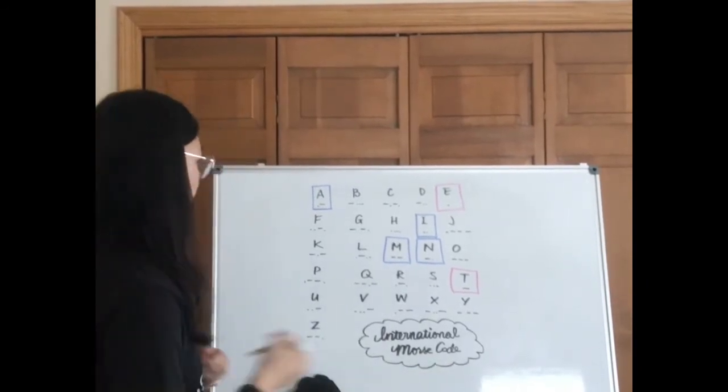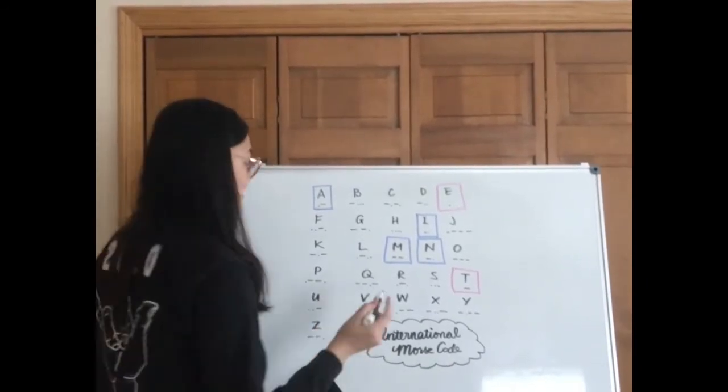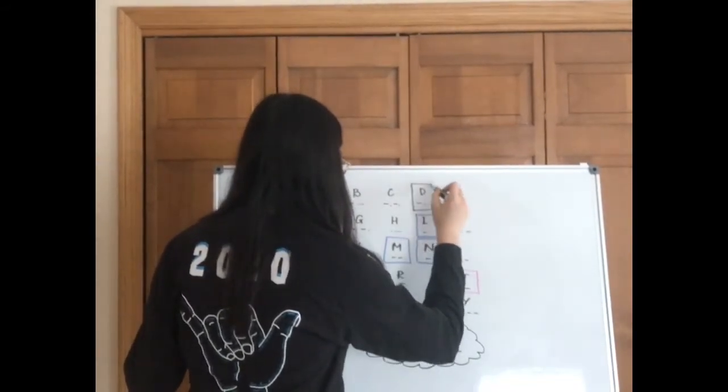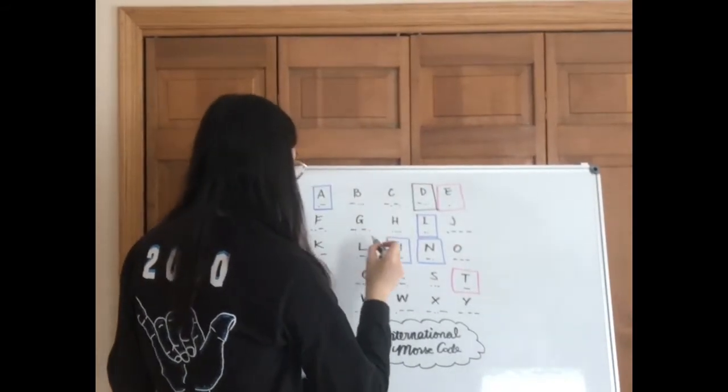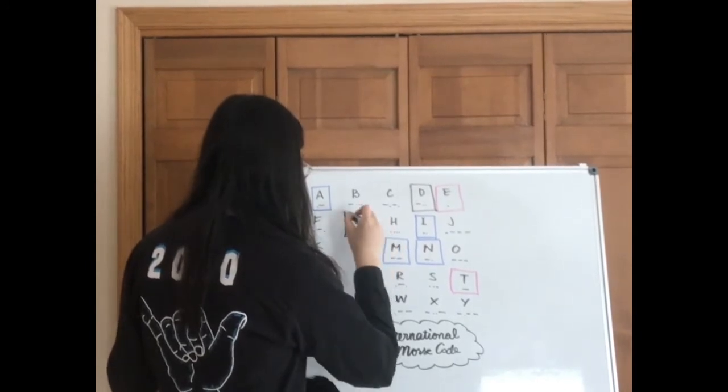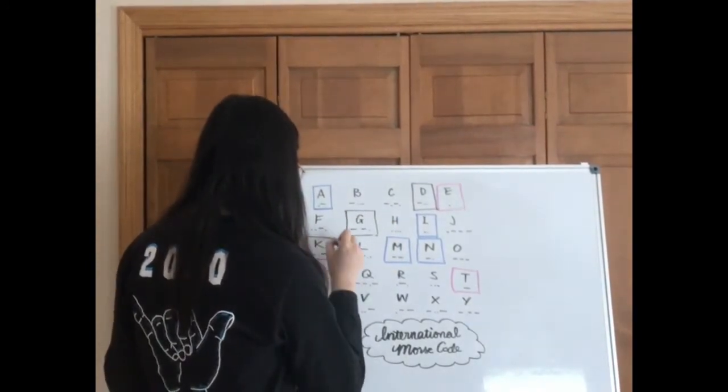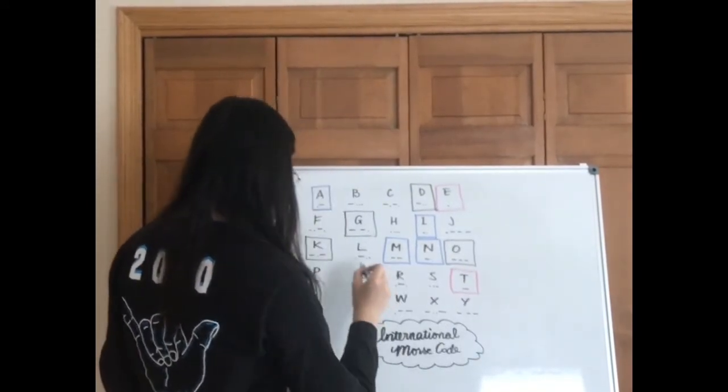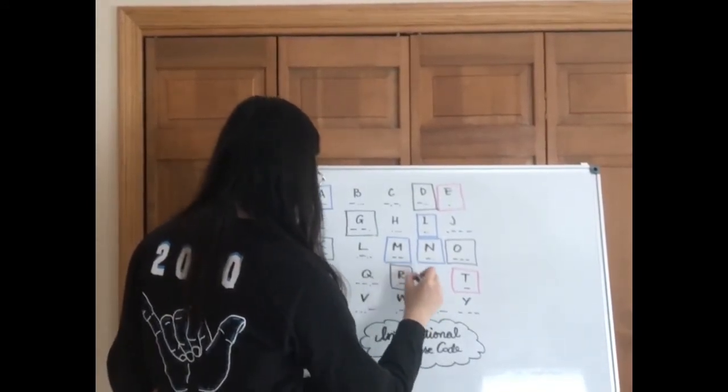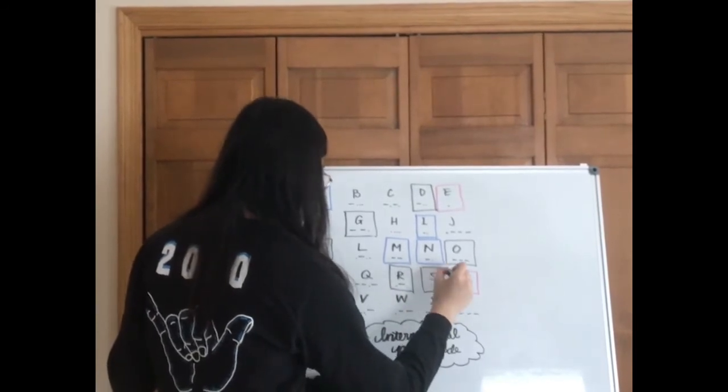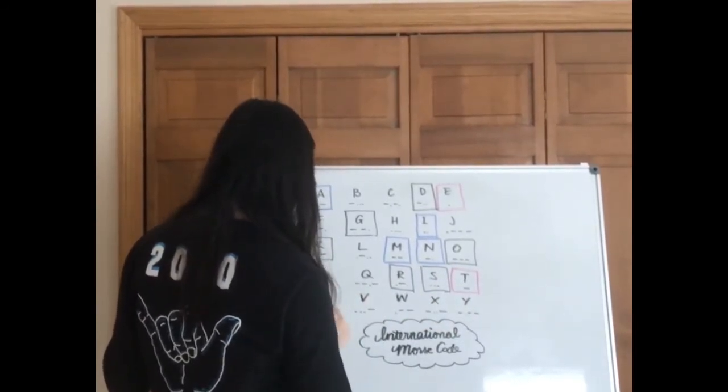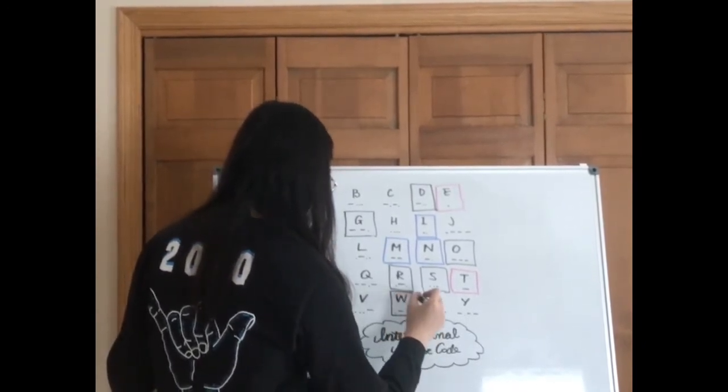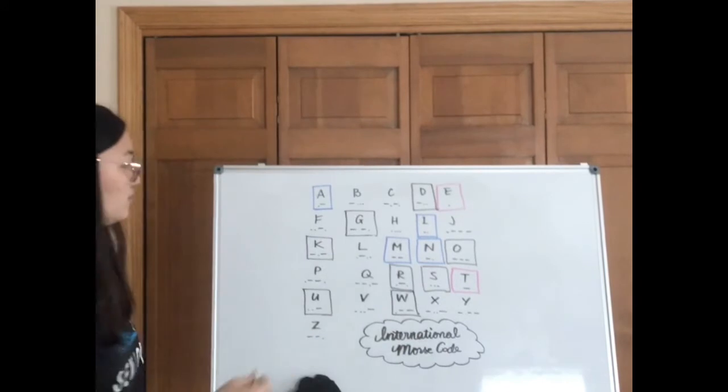And then there's also the threesies. This is sounding really weird now. I'm going to block them in a black marker - five, six, seven, and eight. And then the remainings are all foursies.